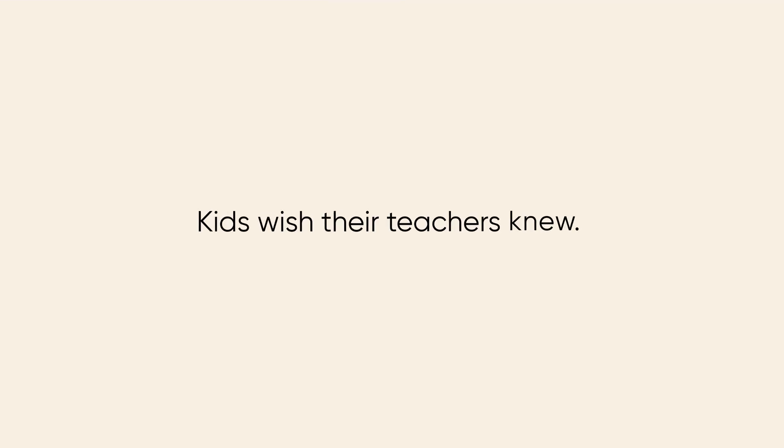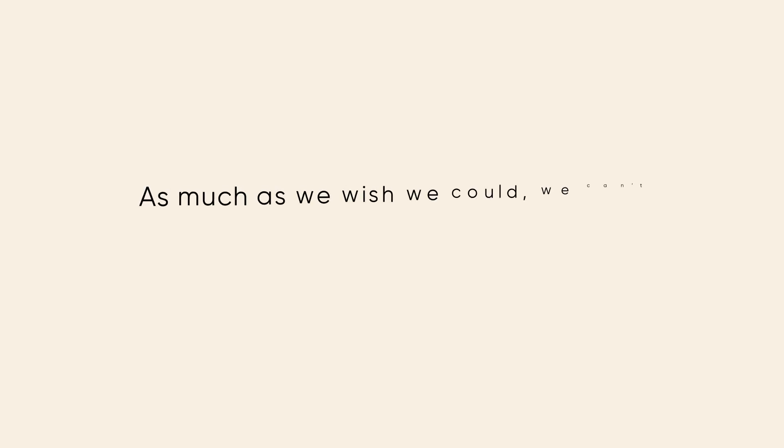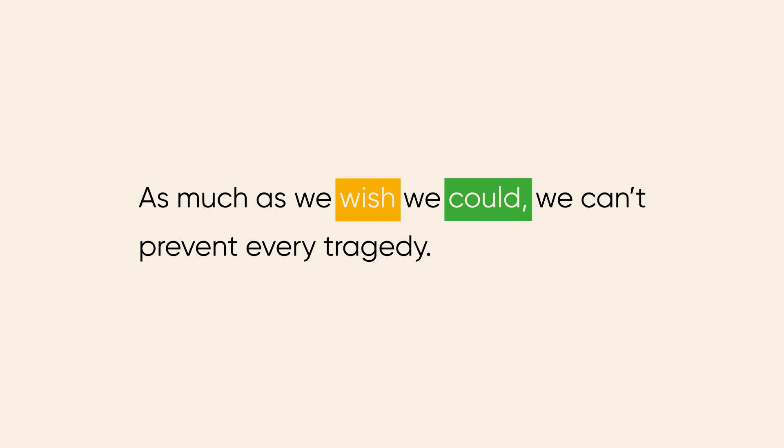Let's look at some examples from TED talks. In one of the speeches, Kyle Schwartz talks about what kids wish their teachers knew and how teachers can make education easier for their students — like this note that says: I wish my teacher knew I love my family. As much as we wish we could, we can't prevent every tragedy. This is a perfect example of regret about an unreal present situation. Here we don't use wish plus can, so don't forget to put modal verbs into their past forms.